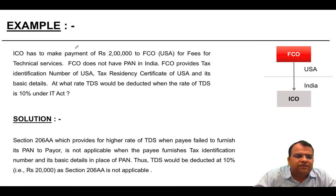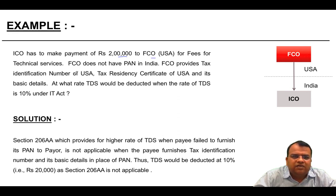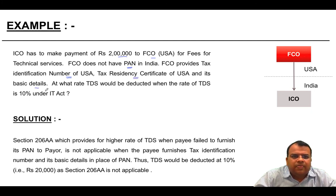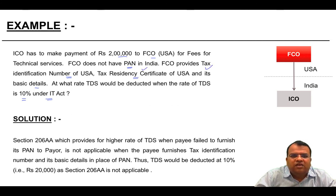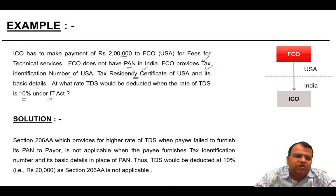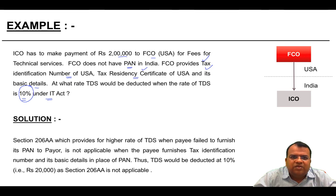Let's see a final example. ICO has made a payment of Rs. 2 lakh to FCO for FTS. FCO does not have a PAN in India but provides its tax identification number of USA, tax residency certificate of USA, and its basic details. At what rate will TDS be deducted when the rate of TDS is 10% under the IT Act? In this case, because FCO has provided TRC, basic details, and tax identification number, it will be eligible to claim the benefit of Rule 37BC. Therefore, the TDS will be only 10% and not the higher rate of 20%.